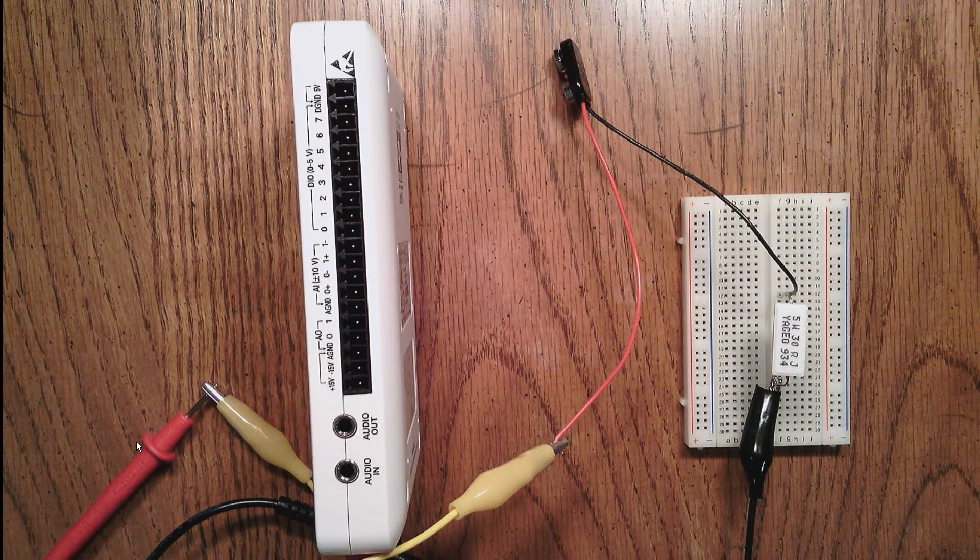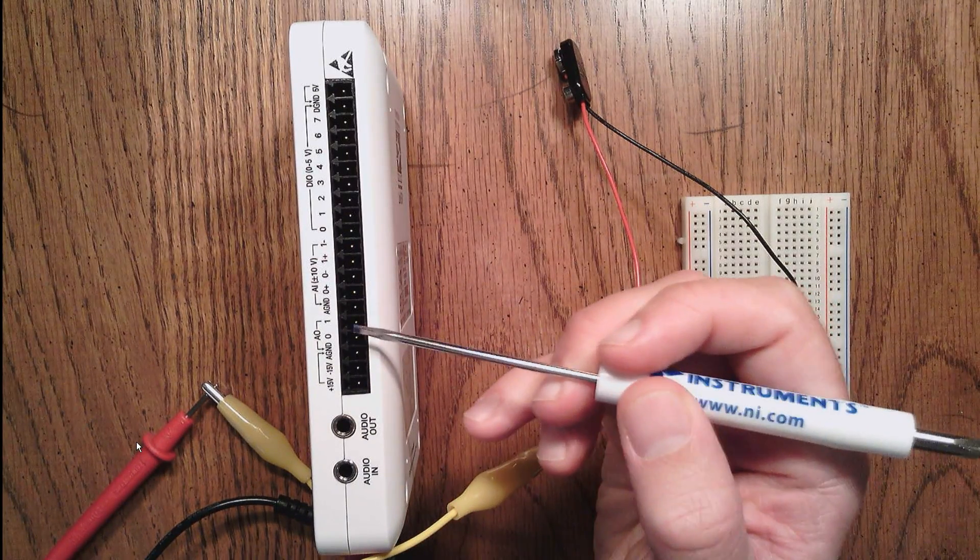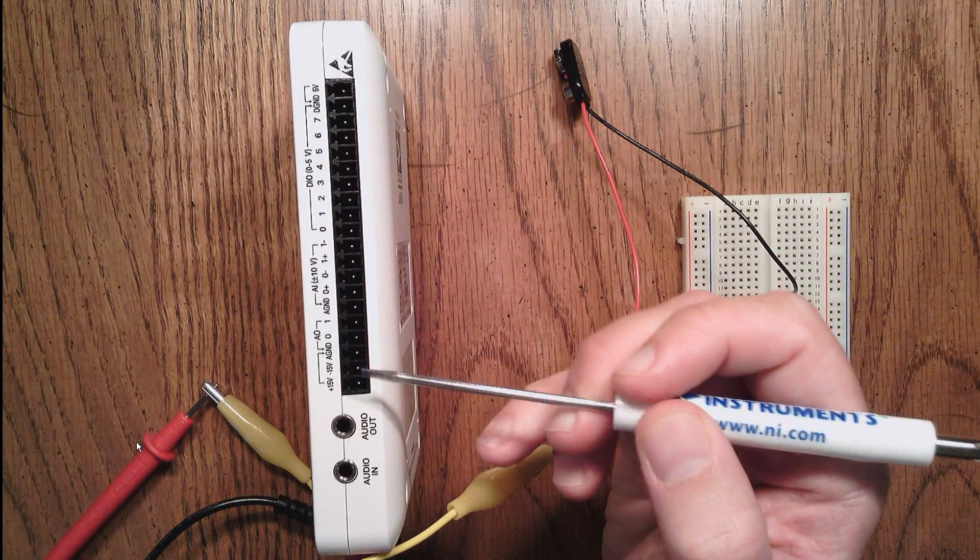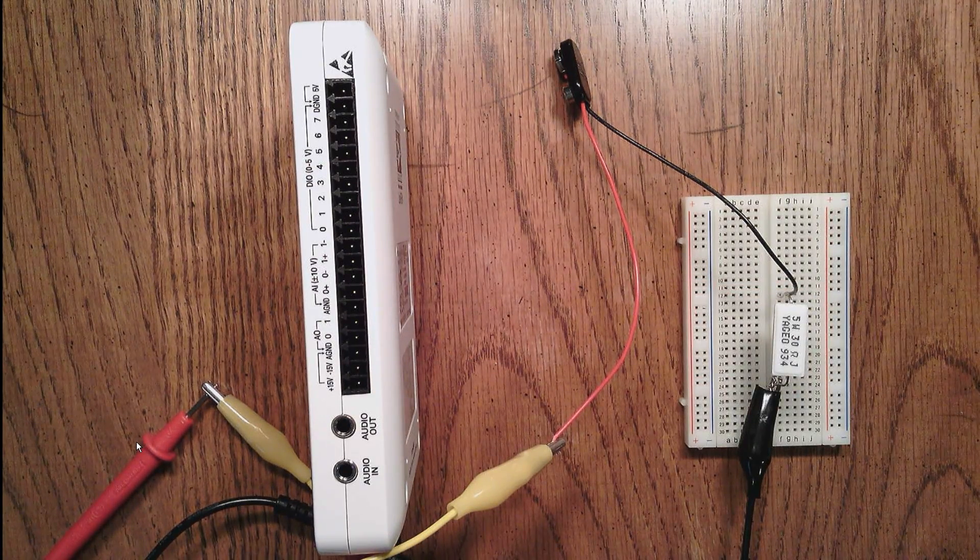The analog input channels for the MIDAC device are located right here on the right-hand side of the device. To make it easier to make these connections,